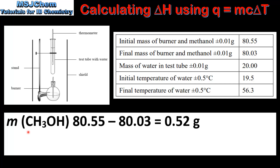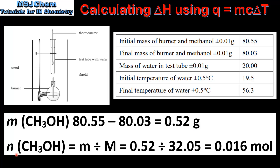The first step is to calculate the mass of methanol used in the reaction. To do this we subtract the final mass of the burner and the methanol from the initial mass of the burner and the methanol, which gives us 0.52 grams. Next we will convert from mass in grams to amount in moles.